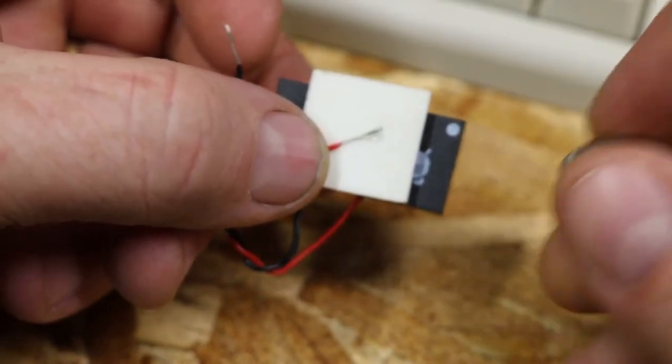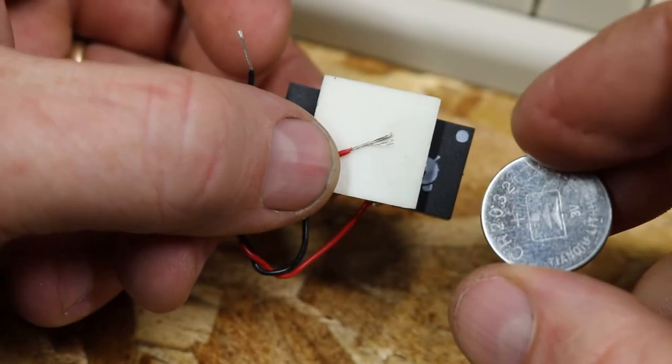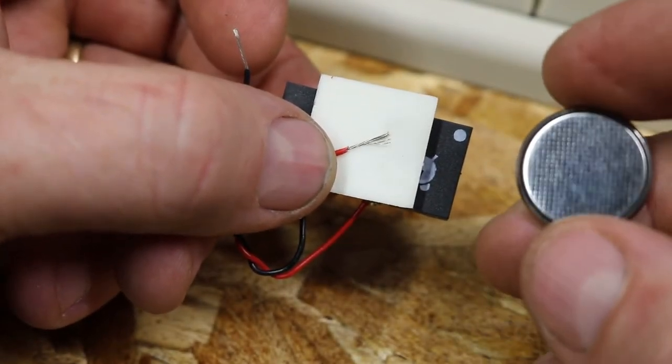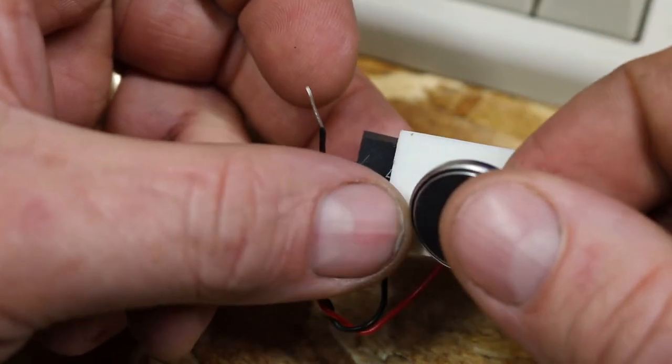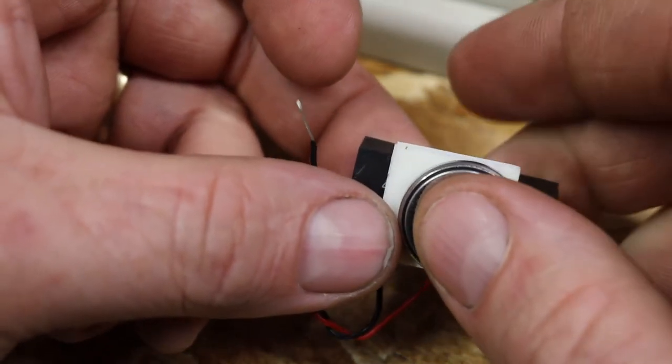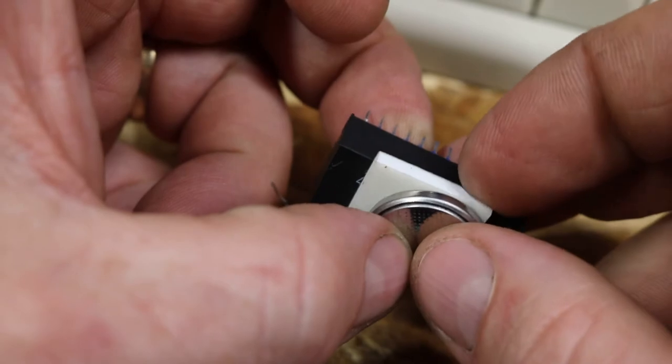The top of the battery is positive, bottom right there on the button's gonna be negative. So I'm gonna want to put this right there on top of that sticky tape. For the most part it's gonna hold that on there, push it down good and tight.